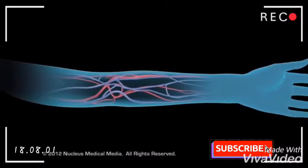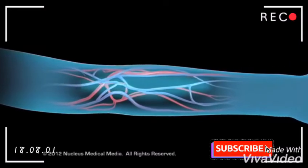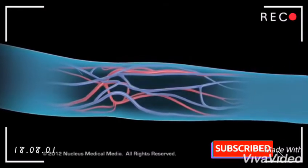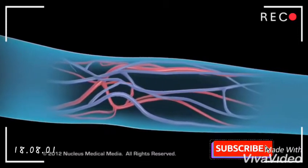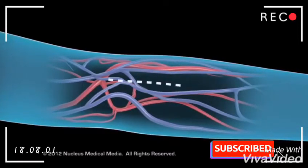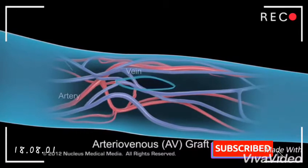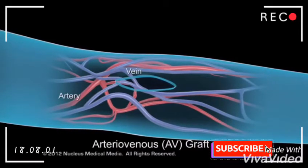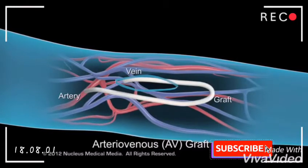To begin, the doctor will numb the area with local anesthesia. To construct an arteriovenous graft, the surgeon will make a small incision in the forearm and insert a soft plastic tube called a graft to connect an artery to a vein.